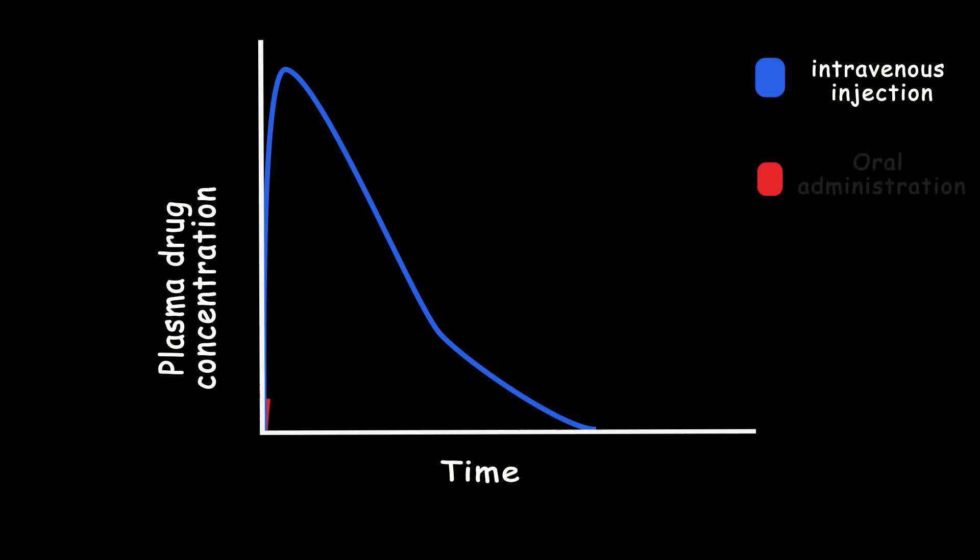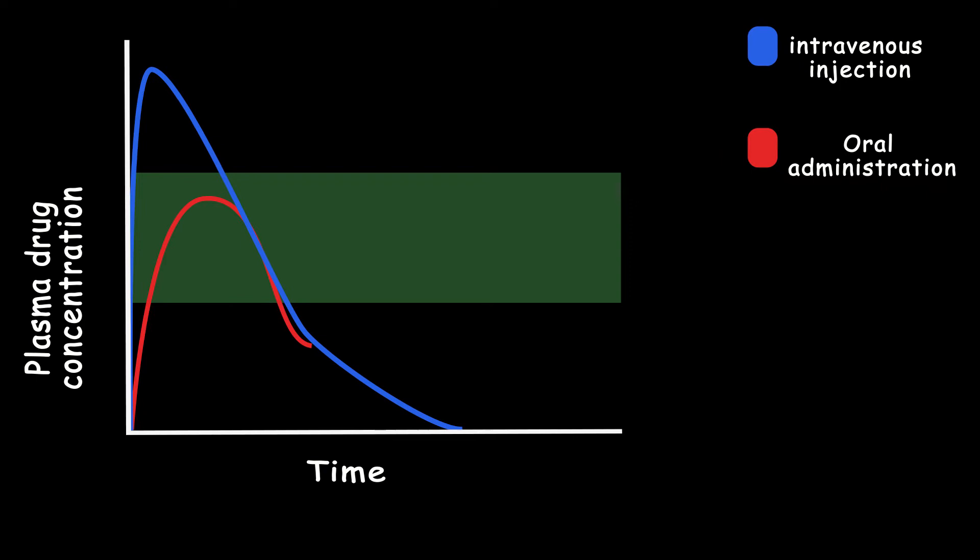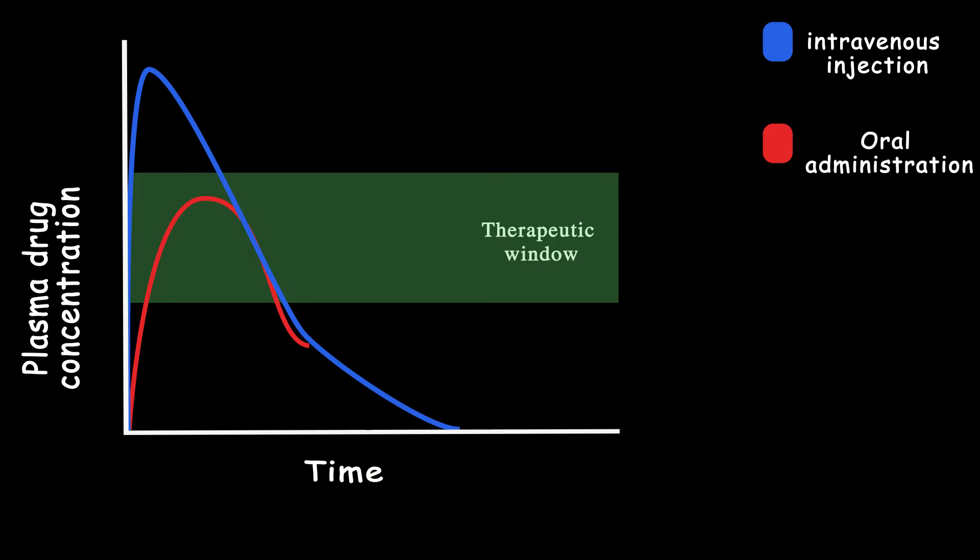Now if you take the drug orally, it needs a little bit more time to go to your stomach and absorb into your bloodstream. In either of those ways, the drug should be in a specific range of concentration in your blood to be effective, which we call the therapeutic window.